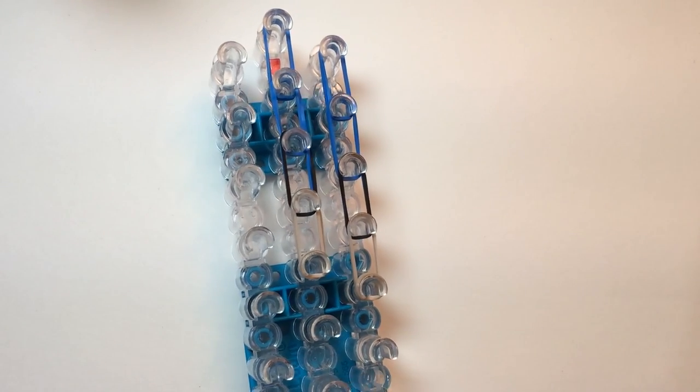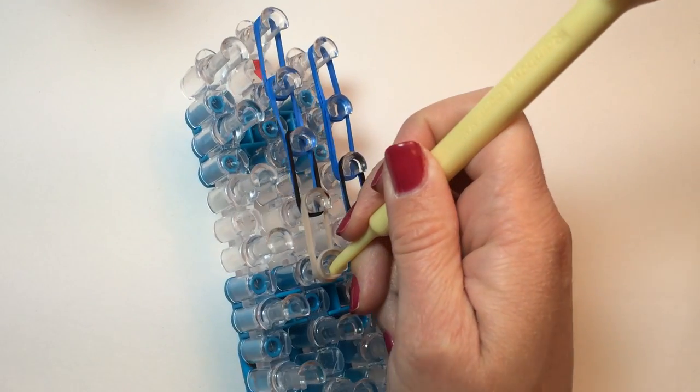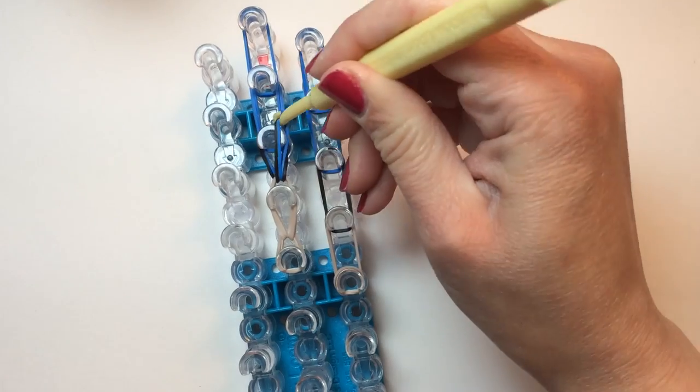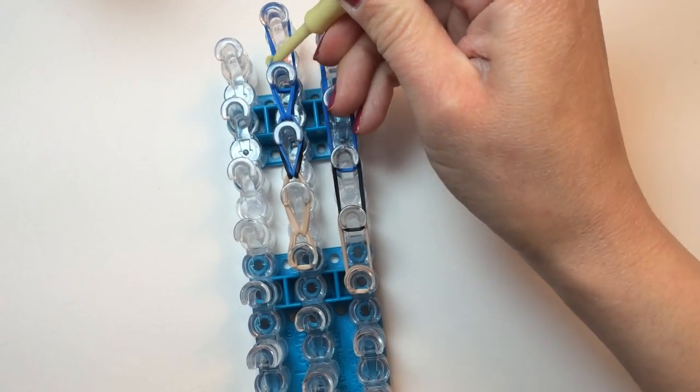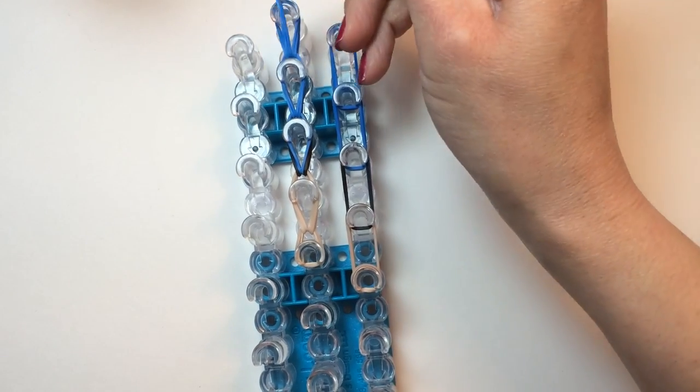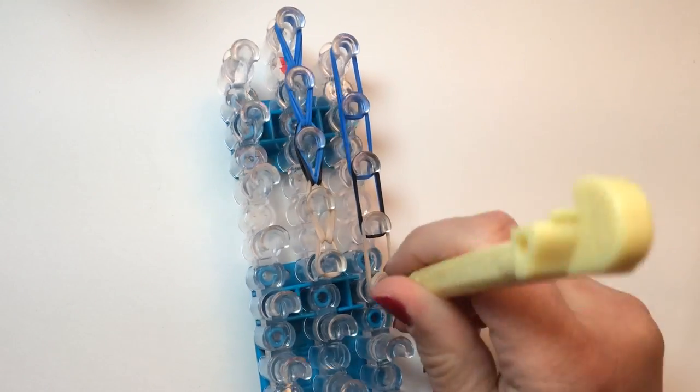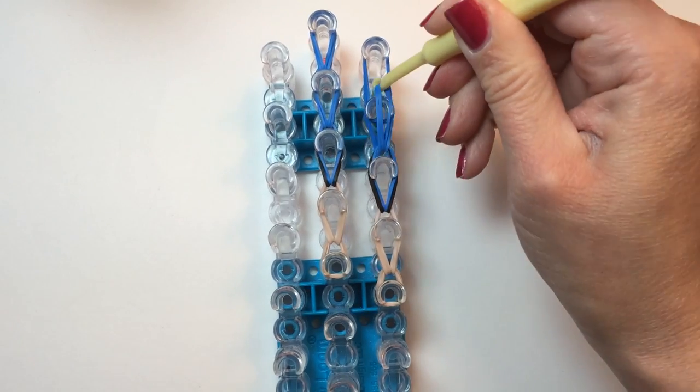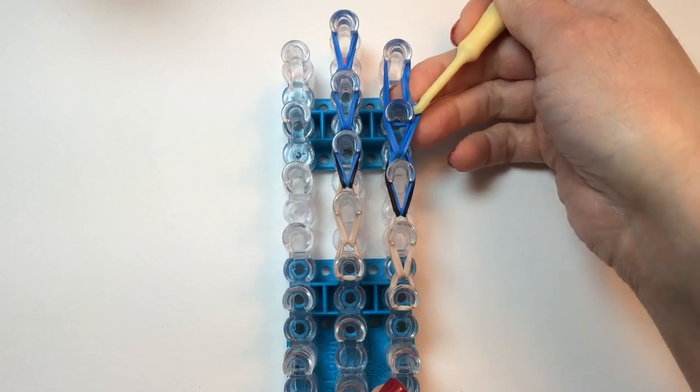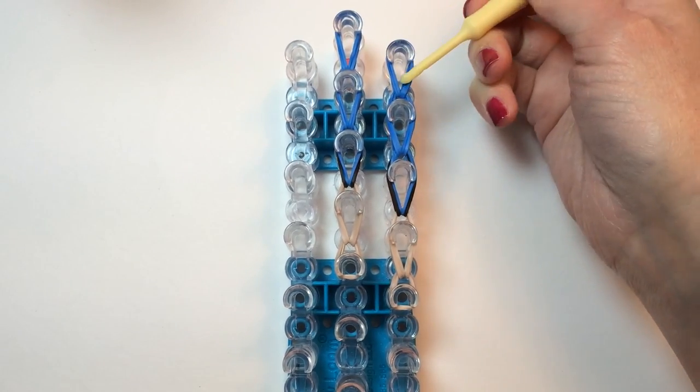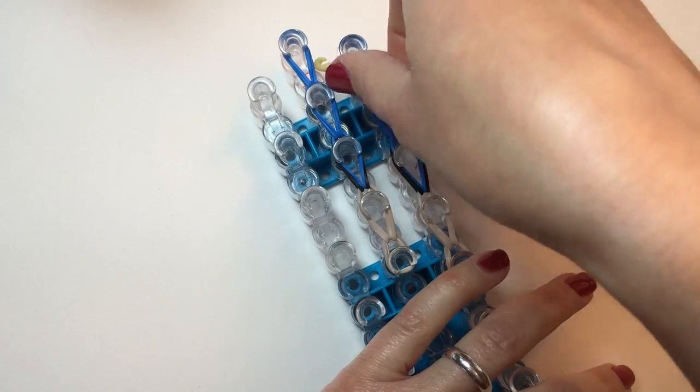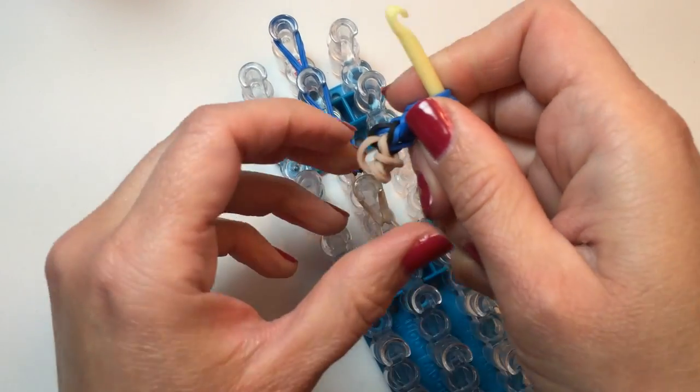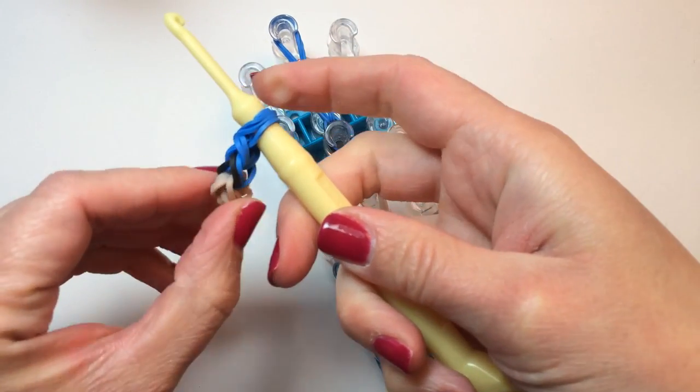Take your hook and starting where you've just placed that tripled over band, you're going to pull back, catch those bands, pull them forward, and repeat for the other arm. Then we're going to place the hook in, put your thumb over so you don't lose it, and pop the arms off.